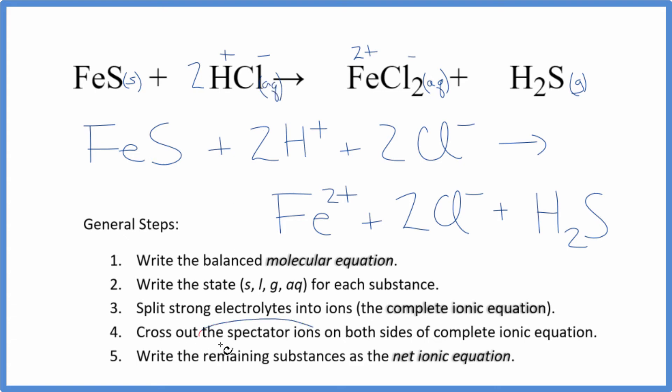Now we can cross out spectator ions. They're on both sides of the complete ionic equation. The only thing I see that's the same in the reactants and the products, those two chloride ions there. Cross those out, and that'll give us the net ionic equation for iron(II) sulfide plus hydrochloric acid.